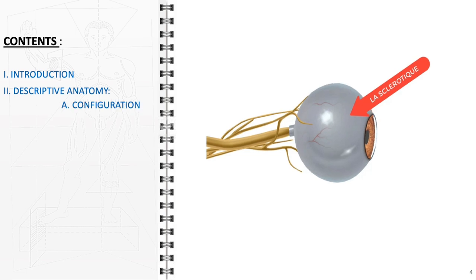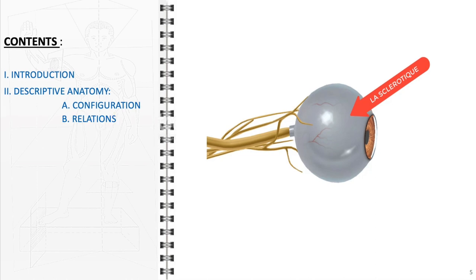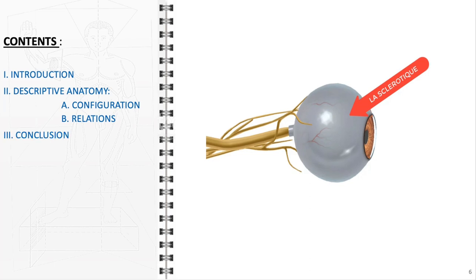We'll then delve into the sclera's intricate structure, highlighting its unique anatomical characteristics. We will also explore the sclera's crucial relationships with adjacent eye structures, such as the cornea and the optic nerve. Finally, we'll wrap up with a concise summary of key takeaways.